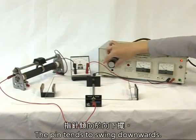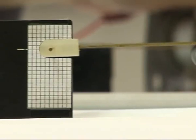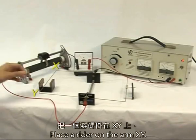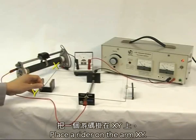The pin tends to swing downwards. Place a rider on the arm XY.